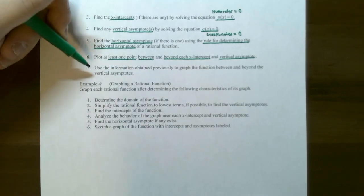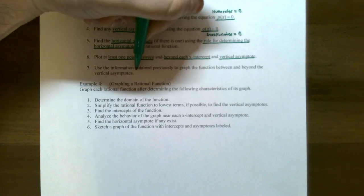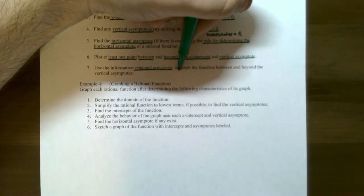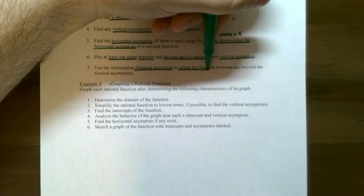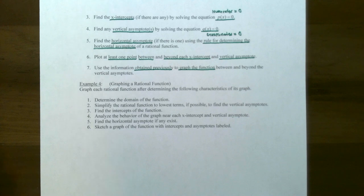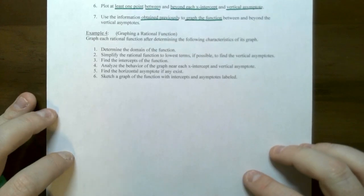Plot at least one point between or beyond any x-intercepts and vertical asymptotes to give accuracy to your graph. This tells you whether the graph exists above or below the x-axis in each region. Then use all the information obtained to graph the function, including all x-intercepts, the y-intercept, and asymptotes.